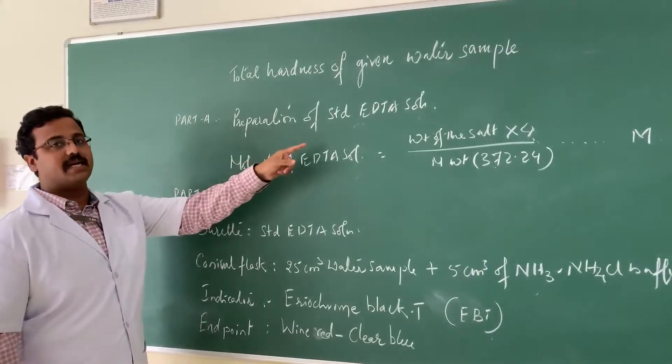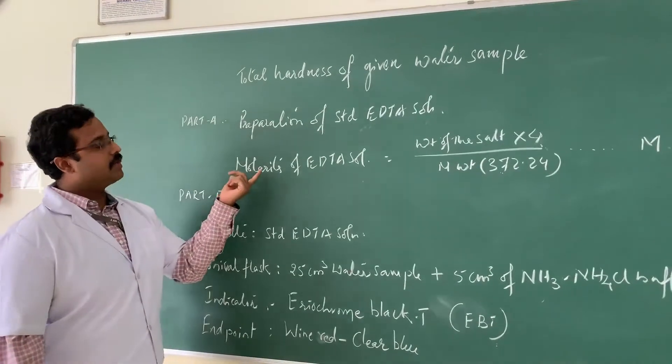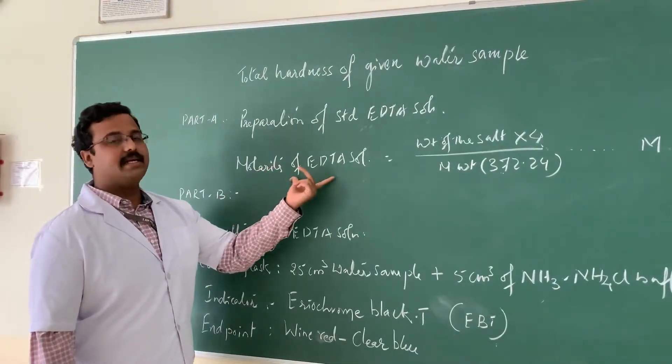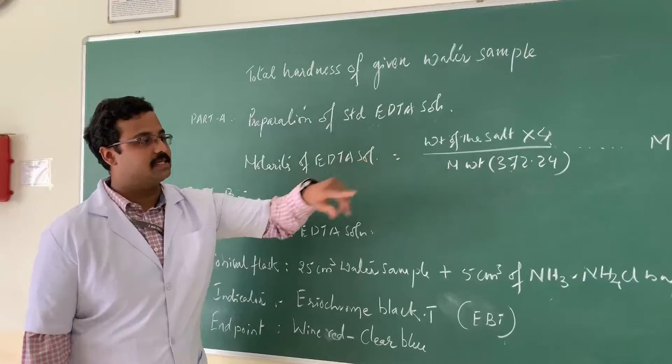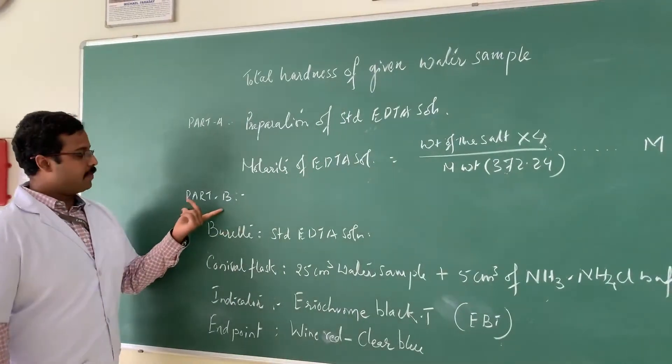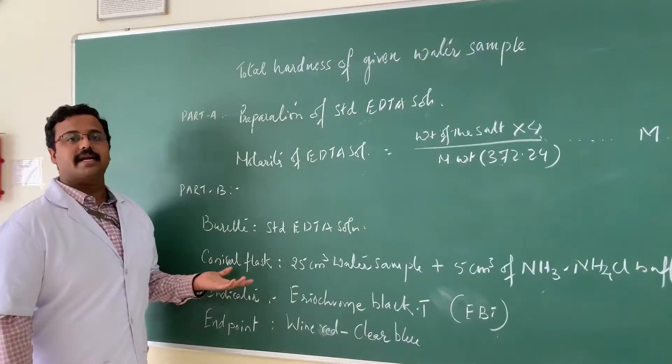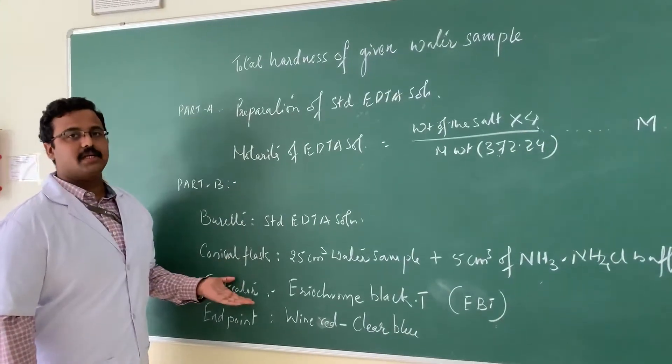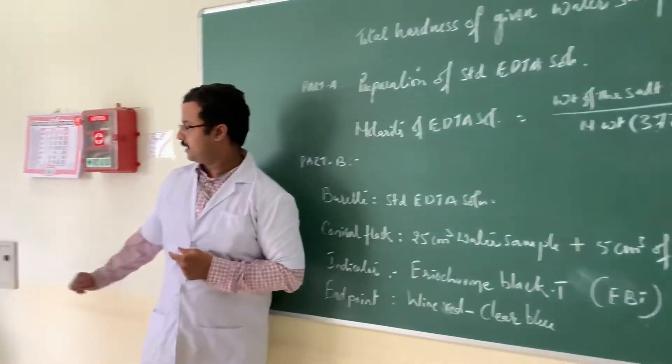Part A consists of preparation of standard EDTA solution and we are going to calculate the molarity of EDTA solution prepared using the formula and will be expressed in terms of number of points. Part B consists of the titration using these reagents and we are going to see how to do the experiment from part one.